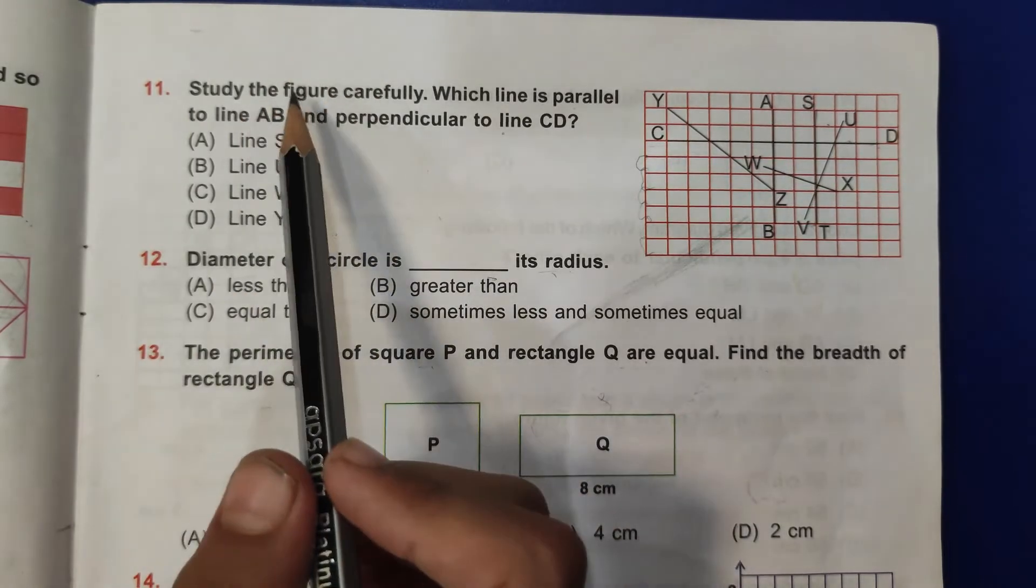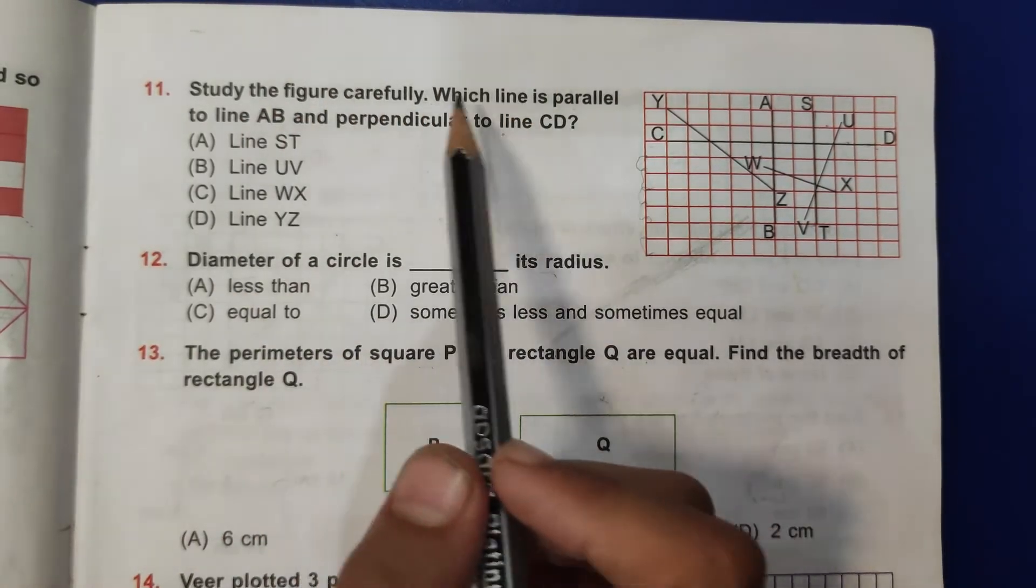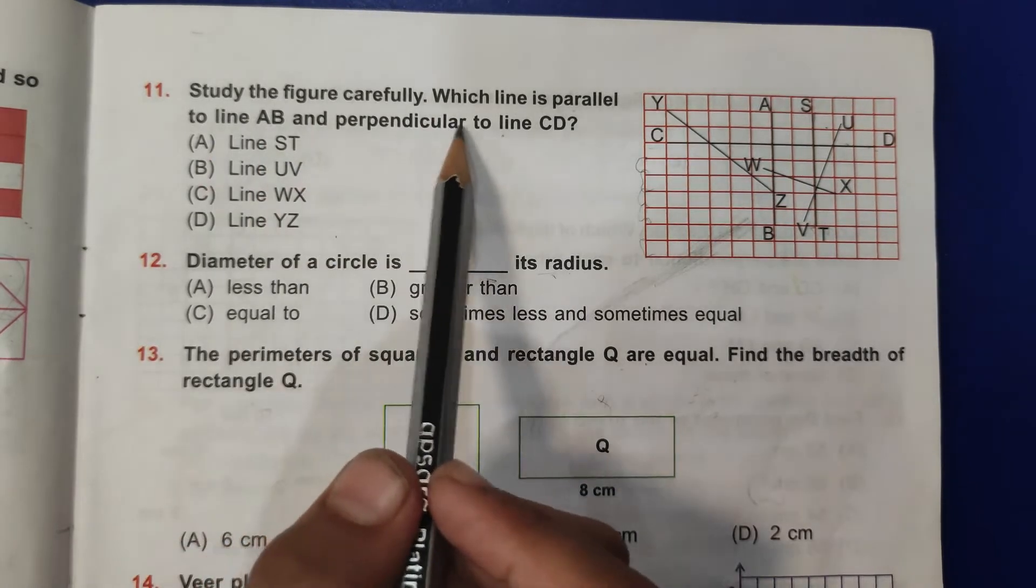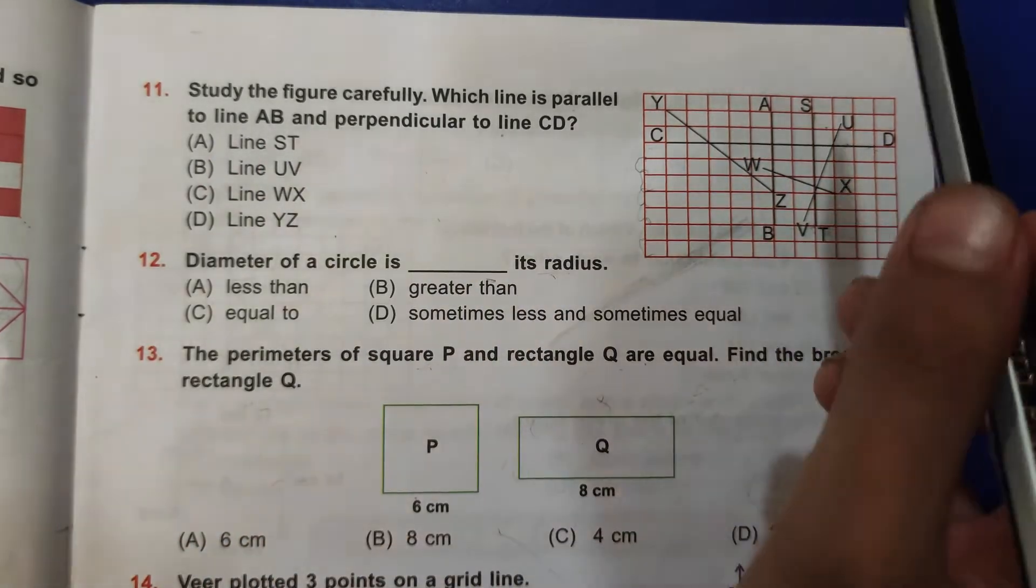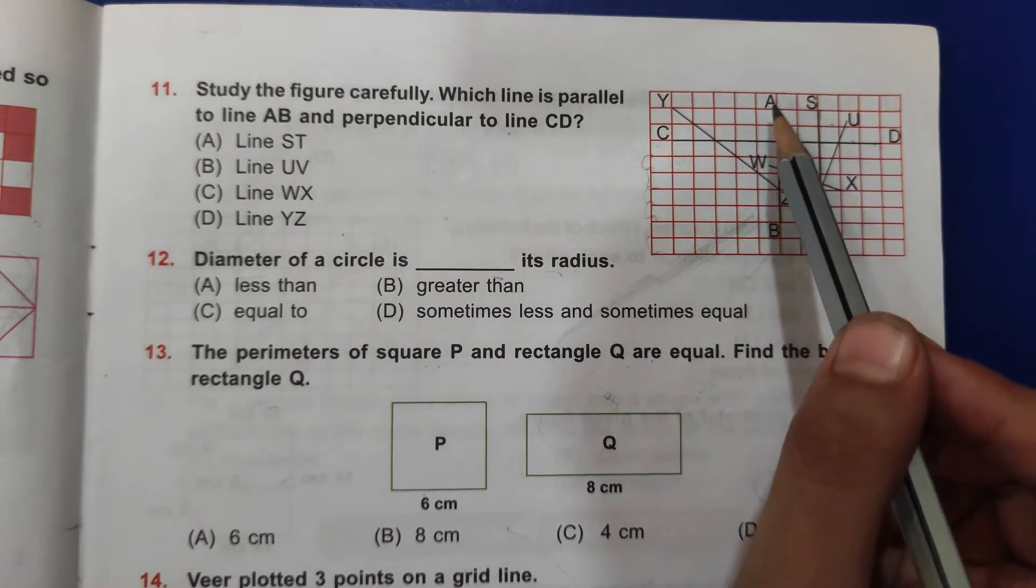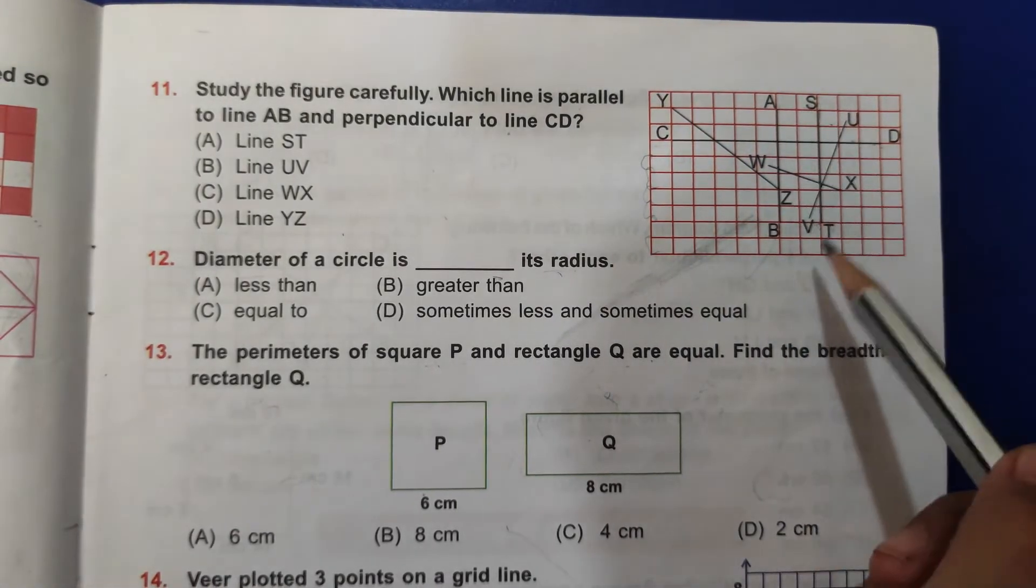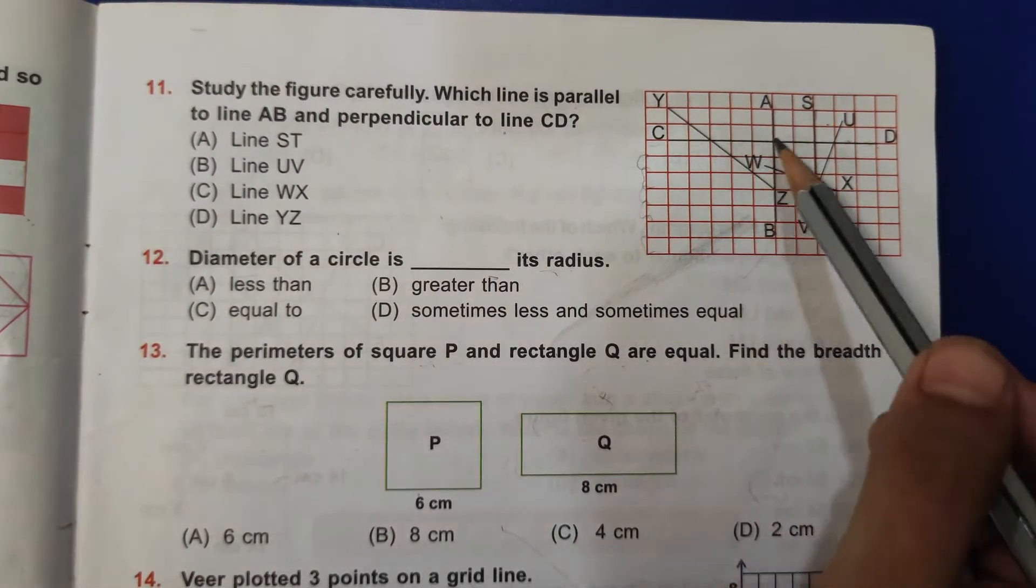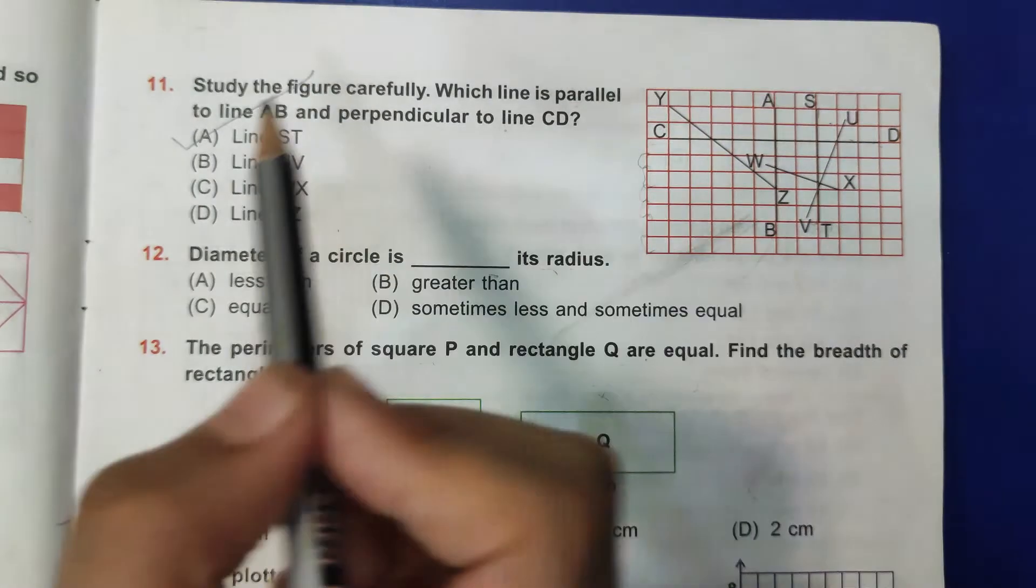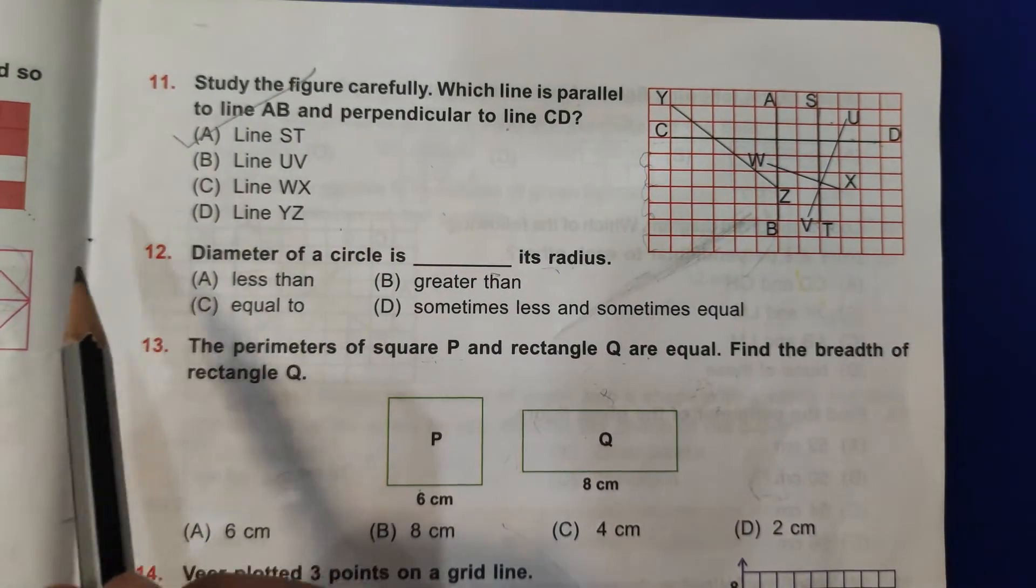Eleventh question: study the figure carefully. Which line is parallel to line AB and perpendicular to CD? So here it is AB and it is CD. So parallel to AB is this ST line, and perpendicular to CD is also ST line. Means A, line ST is the correct answer.